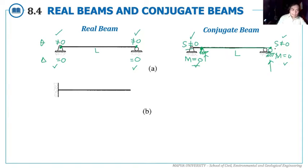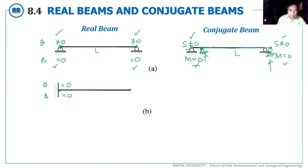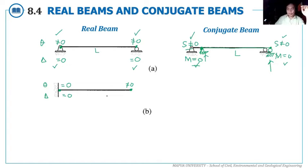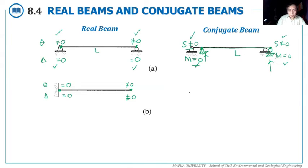For a simple beam with overhang, there are three joints: a free end (joint 1), an interior roller (joint 2), and an exterior hinge (joint 3). At the free end, slope is not zero and deflection is not zero. At the interior roller, slope is not zero but deflection is zero. At the exterior hinge, slope is not zero but deflection is zero.